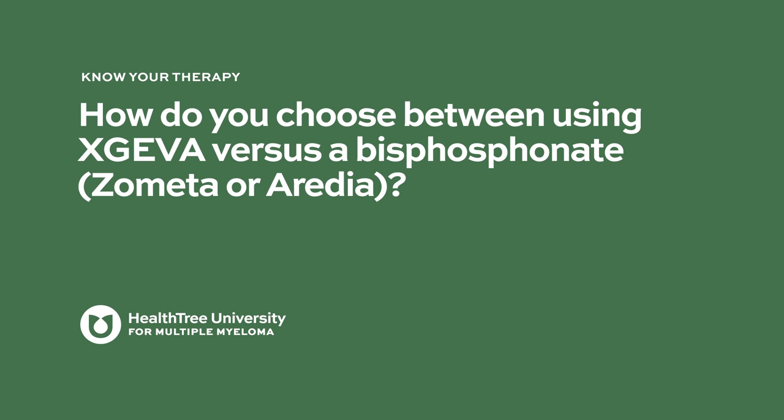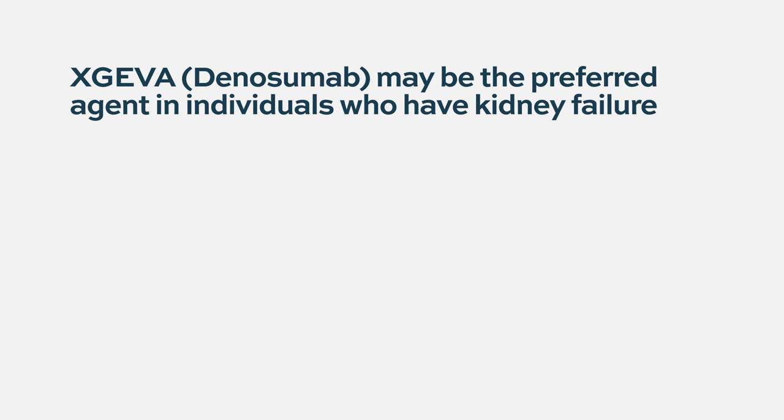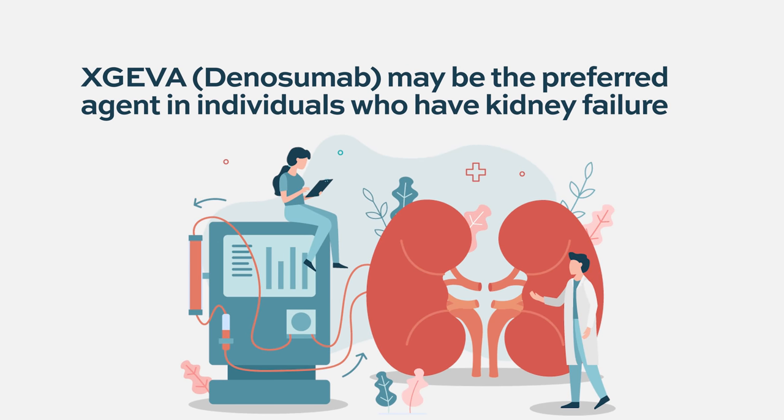How do you choose between using Xgeva versus a bisphosphonate like Zometa or Redia? Both zoledronic acid (Zometa) and Denosumab (Xgeva) are appropriate to give to patients with multiple myeloma. We at times prefer to use Denosumab in patients that have kidney failure because Denosumab is not metabolized through the kidneys, whereas zoledronic acid is, so it seems to be a safer agent in patients with kidney dysfunction.